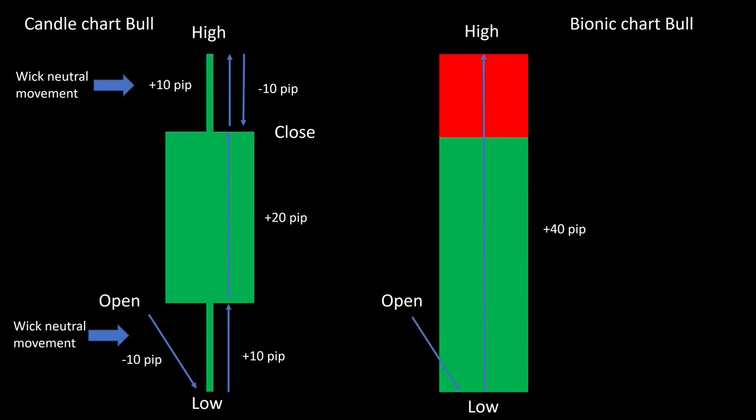With the bionic candle, the price runs from open to low and then to high. Because the price overcomes the open, the lower movement is not neutral for me, but rather bullish. Then there is a small pullback from the high to the close; that is the last movement within the candle, and for this reason this movement is not neutral for me either.